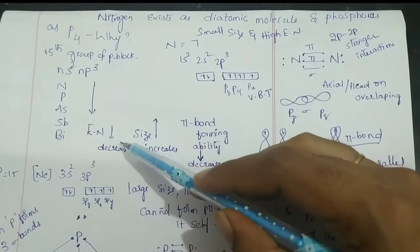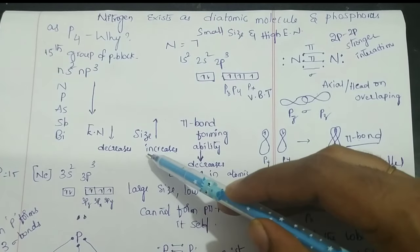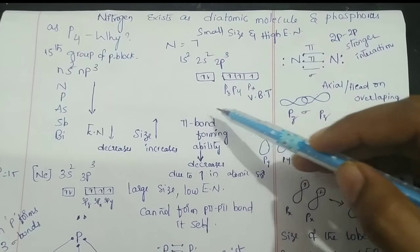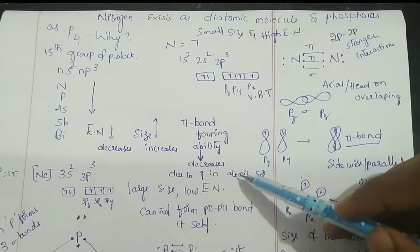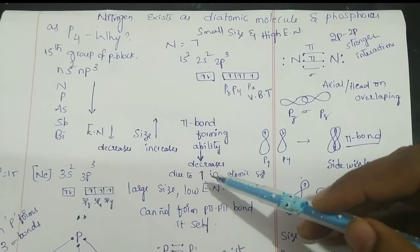Down the group, electronegativity decreases, size increases, and pi bond forming ability also decreases due to increasing atomic size.